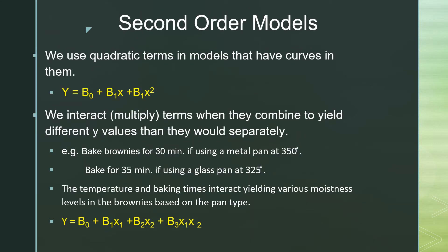Now we'll discuss second-order models. We use quadratic terms in models that have curves. Back in Chapter 3, when we looked at one of the example problems, we saw a curve in our residuals and a little bit in the actual scatter plot. If we take x and square it, that squared x is called a second-order or higher-order term. We can also try interacting x's if we think that together they would yield different values of y.